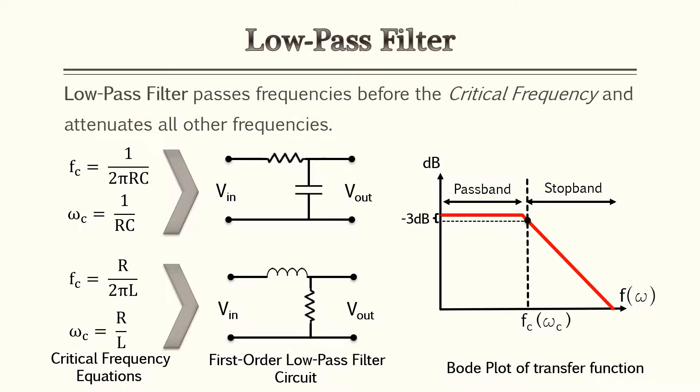With electrical filters, there are four common types. The first is the low pass filter. A low pass filter passes frequencies below the critical frequency or cutoff frequency and attenuates all other frequencies. You can make a first-order low pass filter with a resistor-capacitor or an inductor and a resistor. The circuits are shown here with their associated equations, and a Bode plot to the right illustrates the low pass filter — at low frequencies it has a passband, and it rolls off at higher frequencies. Hence the term low pass filter.